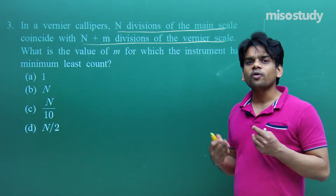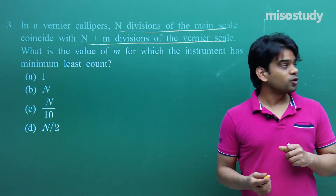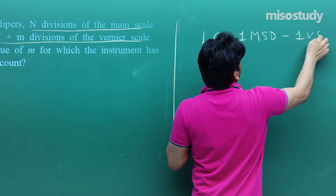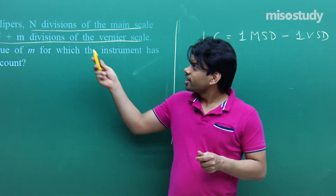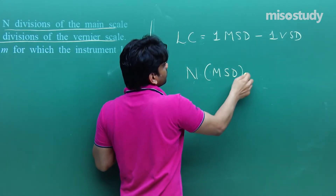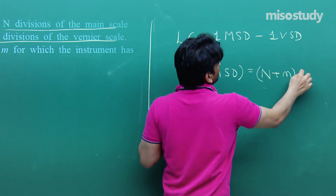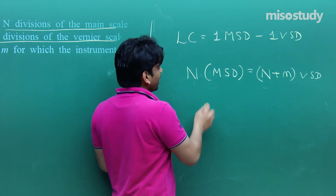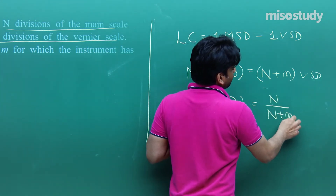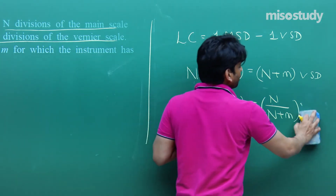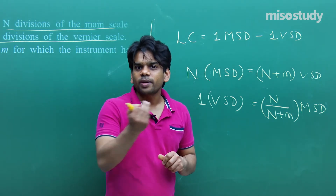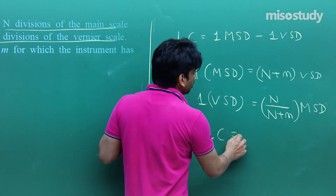To solve this, we use the formula: Least Count = 1 MSD − 1 VSD. Given that N divisions of main scale coincide with N+M divisions on vernier scale, we write: N × MSD = (N+M) × VSD. From this, 1 VSD = N/(N+M) × MSD. Substituting into the least count formula: LC = 1 MSD − N/(N+M) × MSD.